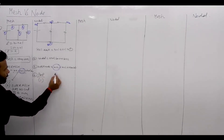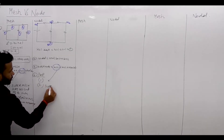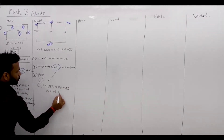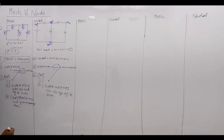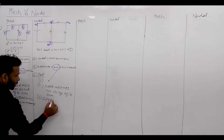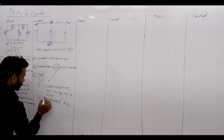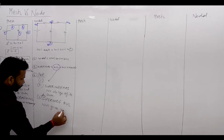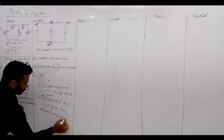Property number 1 of super node: super node has no voltage of its own. And in a super node, KVL will give you the necessary equation.